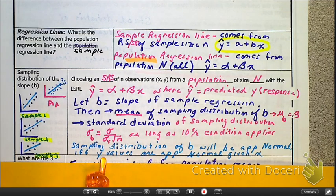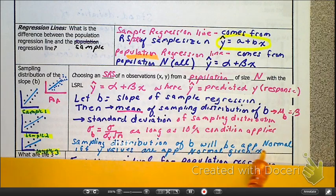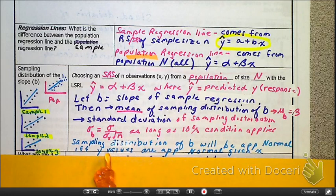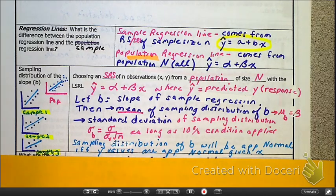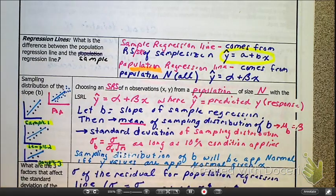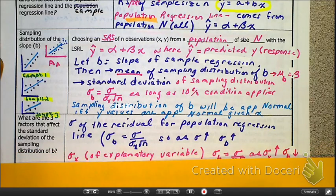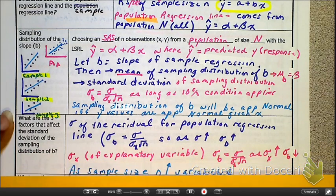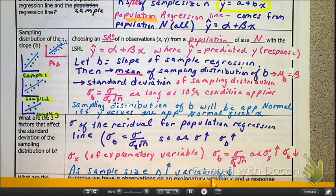The sampling distribution has to be approximately normal. But what are we looking to be approximately normal in this case? We're looking for your output — your response variable — your Y values to be approximately normal. As your sample size increases, your variability decreases — we know that.